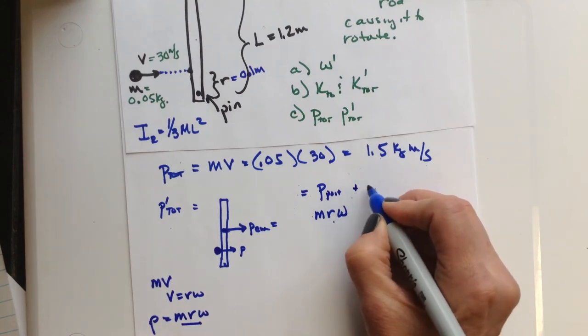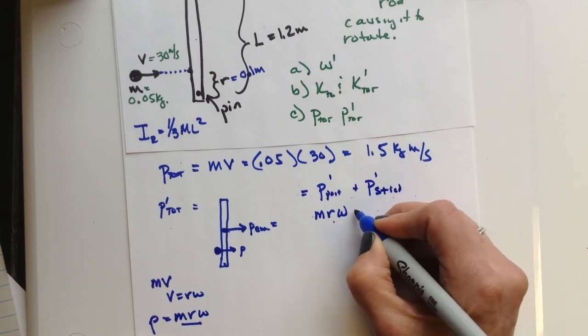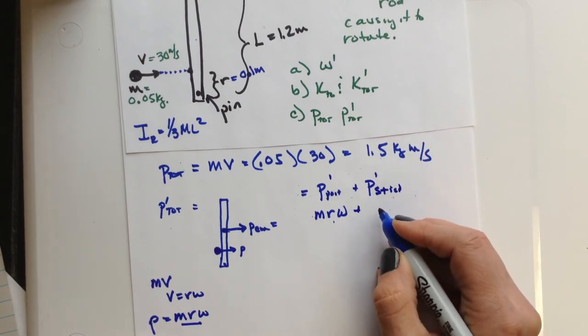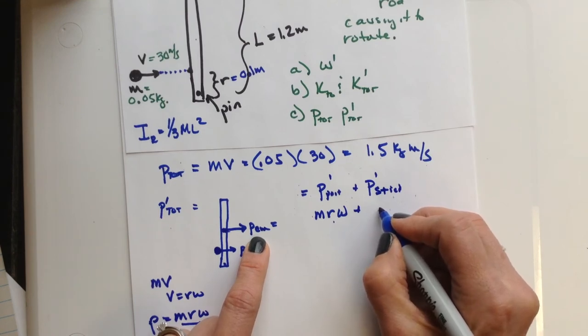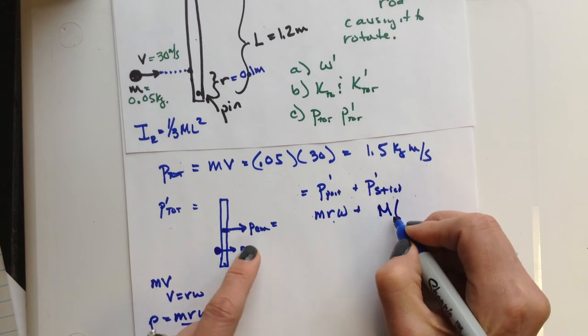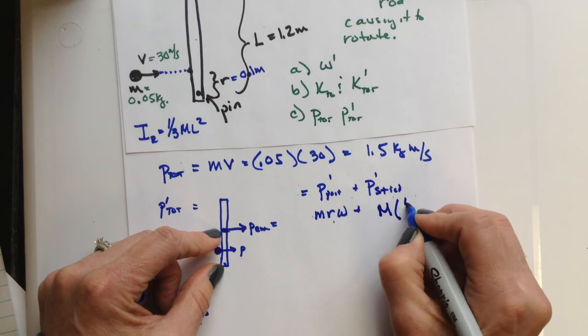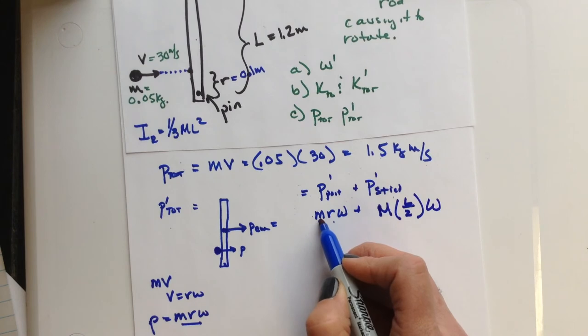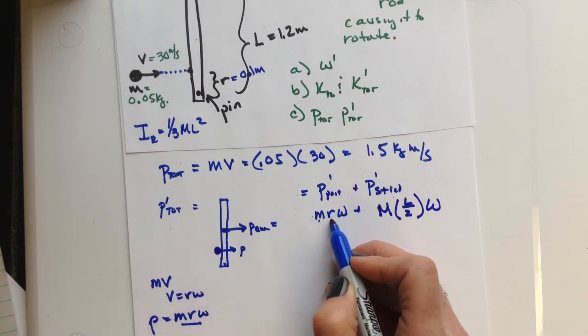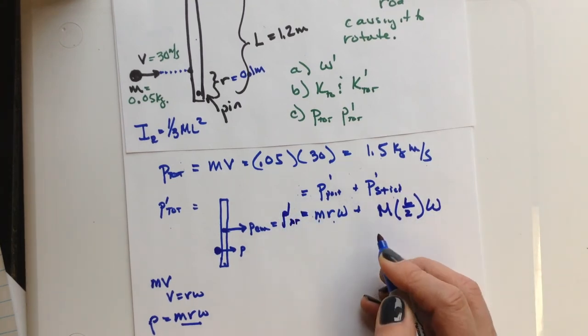so that's where that came from, plus the momentum afterwards of the stick itself, which is just going to be its mass times the radial distance from the pivot point, which will be half the length of the stick, times its angular velocity. So similar idea here, we take the mass of the object, the distance from the pivot point, and then its angular velocity. Multiply it all together, and we get our total angular momentum afterwards.